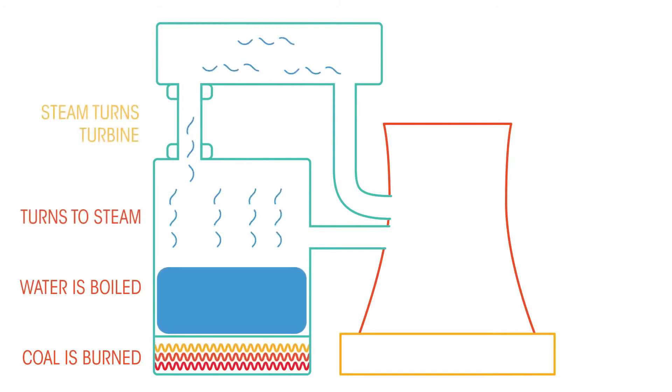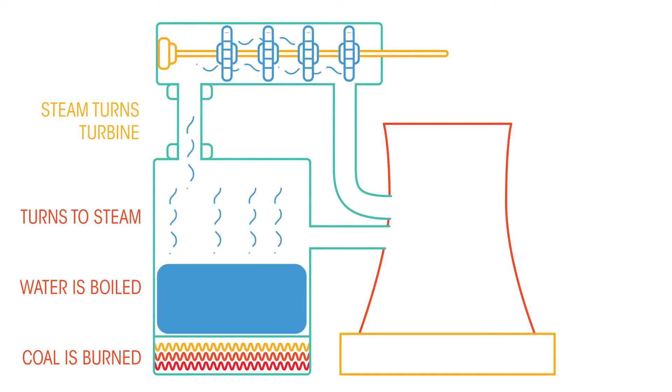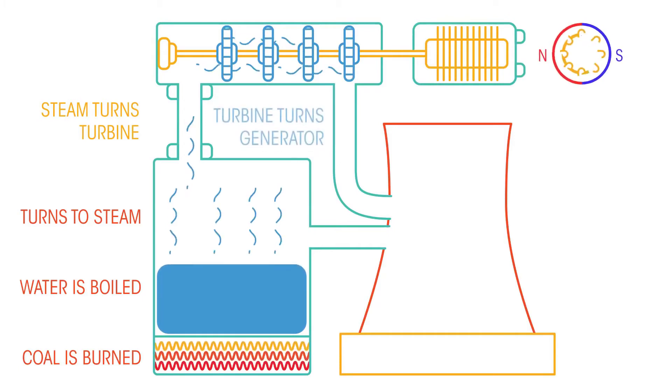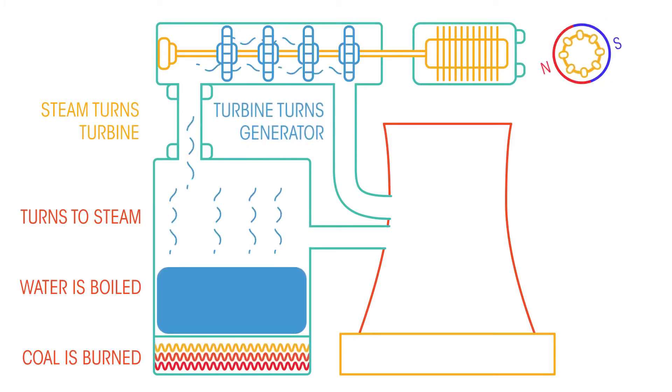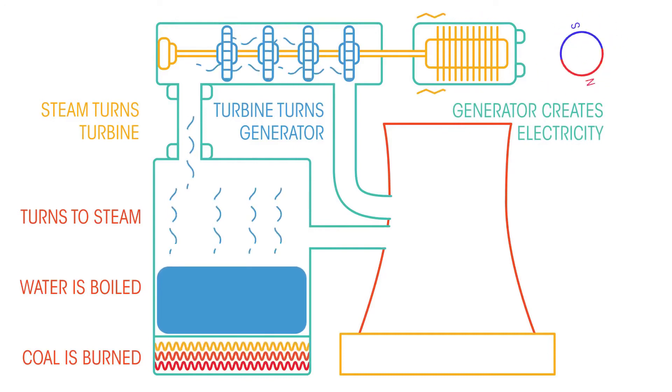Two: this steam is used to turn the blades of a turbine. A turbine looks like a fan or a wind turbine. The turbine turns a generator. Inside, wires turn within magnets to generate electricity.